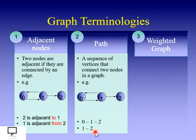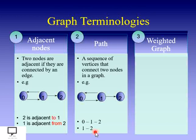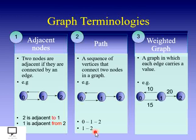The third terminology is weighted graph. A weighted graph is a graph where weights are specified on the connected edges. For example, if different cities are connected with each other by roads, we need to know the distance between two cities, and that distance is represented with the help of weight on the connected edge. Here, from 0 to 1 the weight is 15, from 1 to 0 it is 10, and from 1 to 2 it is 20. Adjacent nodes, path, and weights are the most important terminologies with respect to graph representation.